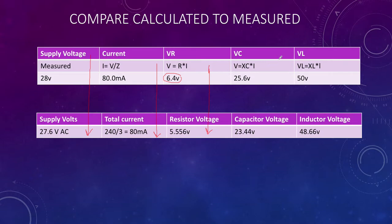Then our voltage across the capacitor. Again, close. 25.6 is what we thought we would get, and we got 23.44. So again, allowing for inaccuracies in our meters, that's very close. Finally, our voltage across the inductor. We estimated we would get 50, and we actually got 48.66. So again, very, very close.